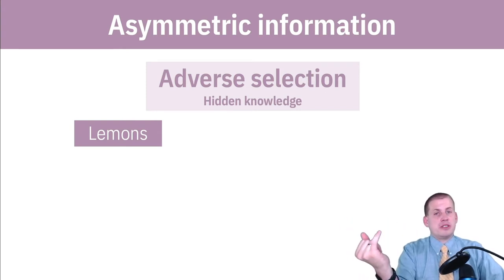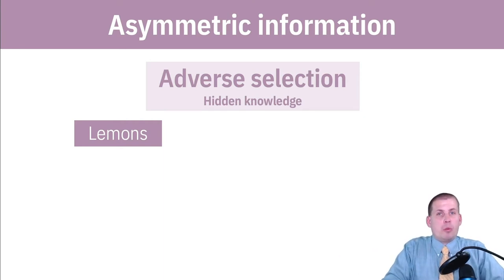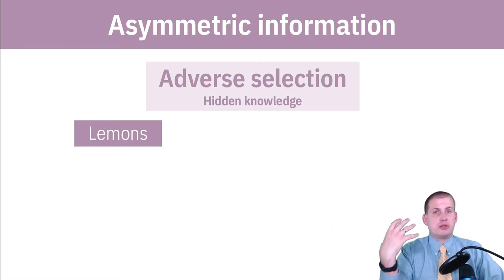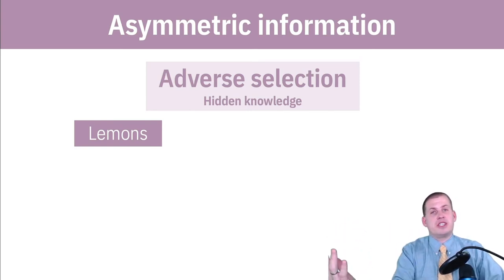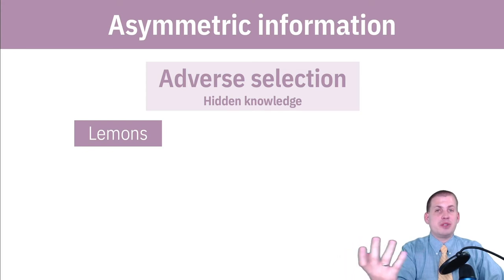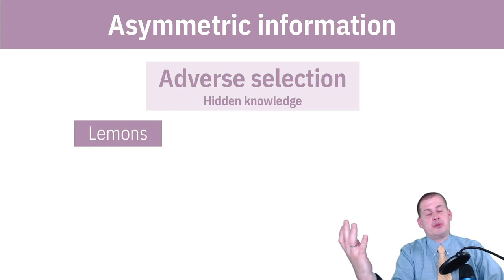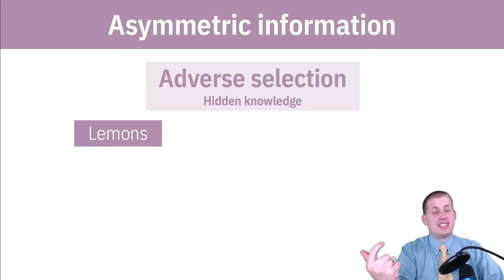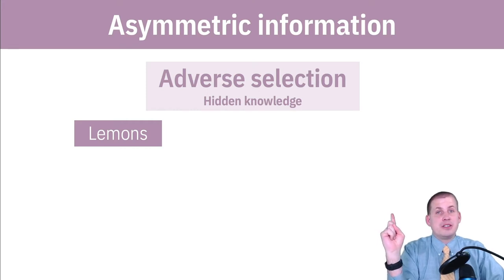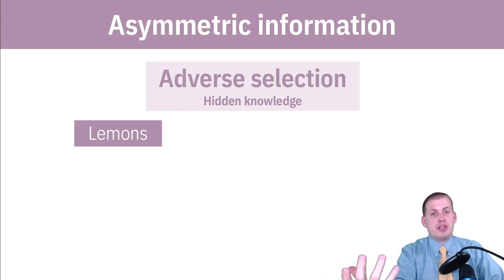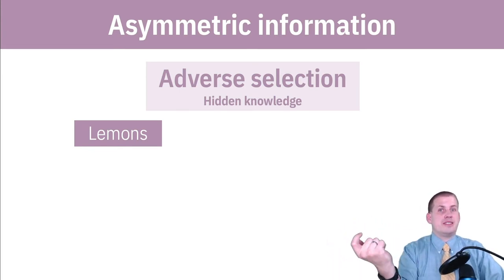One way you fix this is by making that knowledge no longer hidden. With cars, there's an institution called Carfax, where every car has a detailed history associated with its vehicle identification number. Dealerships can look up that number and see how often it's been serviced and what the problems are. You can request Carfax reports whenever you buy a car. The whole reason Carfax exists is to remove this adverse selection — so if somebody is trying to sell a lemon, you'll be able to see it, and it's no longer hidden knowledge.